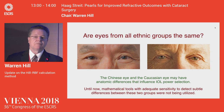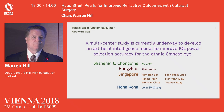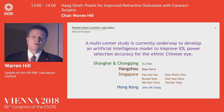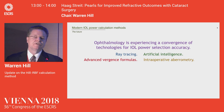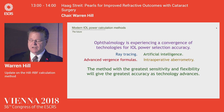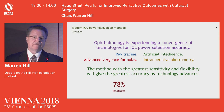The next project for Haggis and the RBF team is to develop a calculator specific for the ethnic Chinese eye. A multi-center study is currently being set up at some of the largest centers in China, as well as investigators in Singapore and Hong Kong. In my experience, ophthalmology is experiencing a convergence of technologies: ray tracing, artificial intelligence, intraoperative aberrometry, and very advanced vergence formulas like the Barrett Universal 2. But the method with the greatest flexibility and sensitivity is going to win the race.